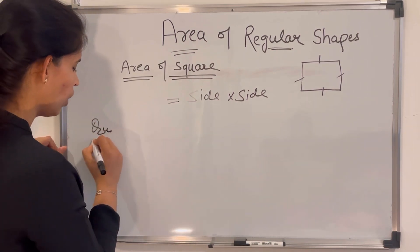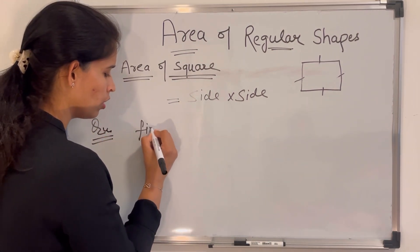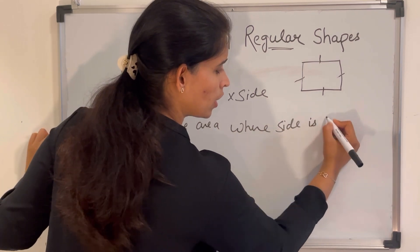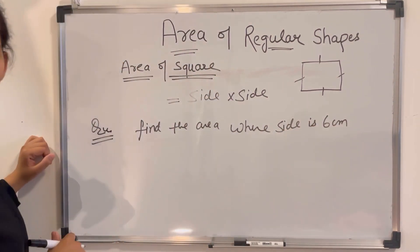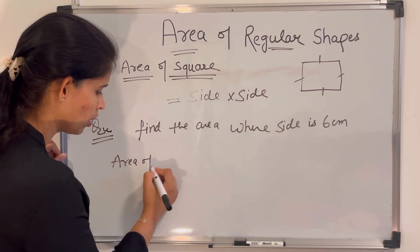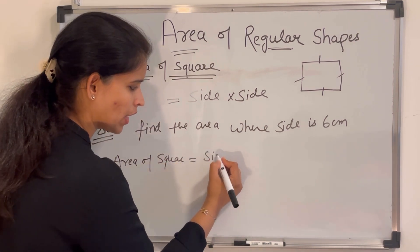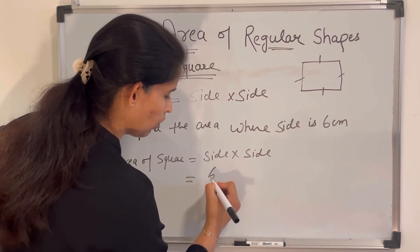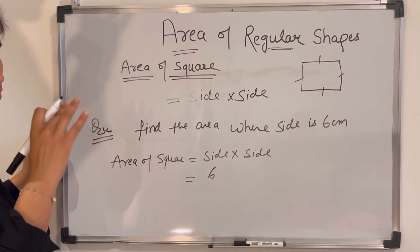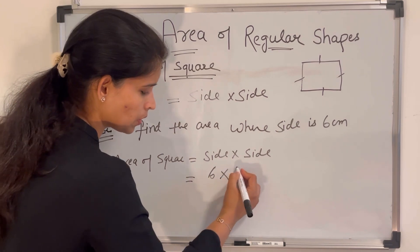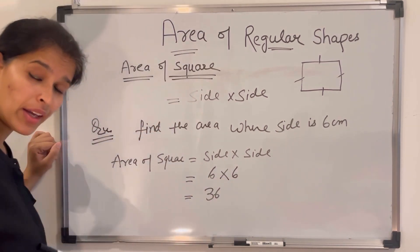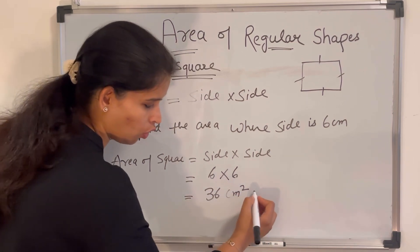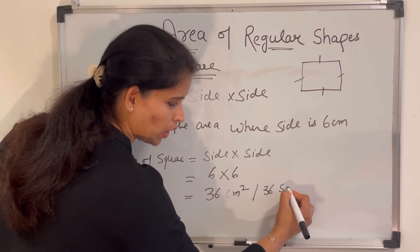Let us take one question: find the area of a square where the side is 6 centimeters. Area of square is side into side. Since all sides are equal, it is 6 × 6 = 36. The unit is centimeters, so the answer is 36 square centimeters.